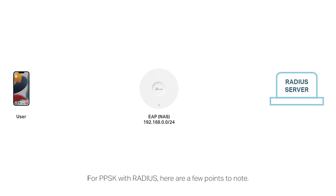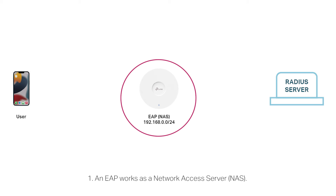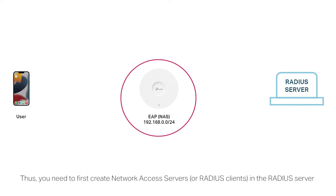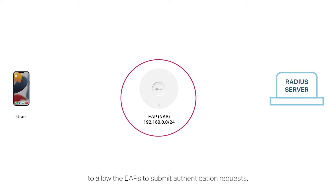For PPSK with Radius, here are a few points to note. An EAP works as a network access server. Thus, you need to first create network access servers, or Radius clients, in the Radius server to allow the EAPs to submit authentication requests.